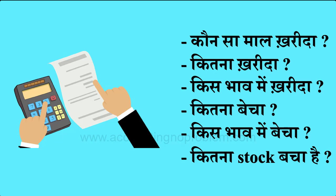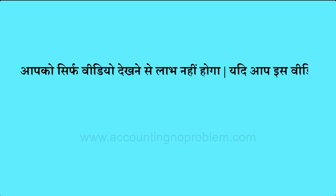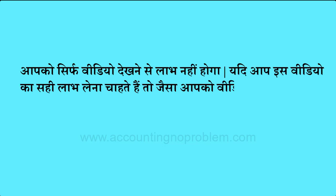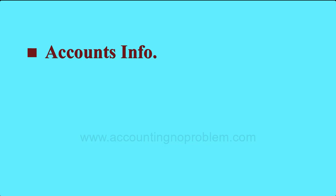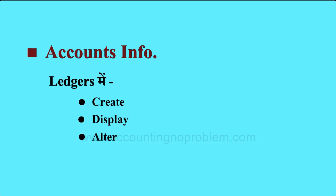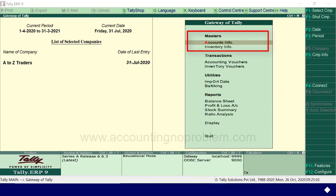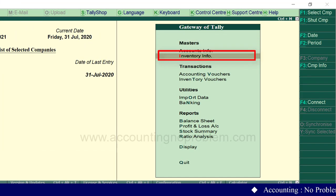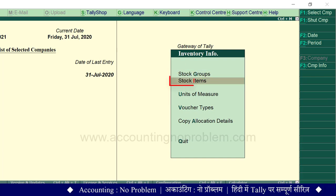आगे बढ़ने से पहले हम अपना निवेदन एक बार दोहरा दें — आपको सिर्फ वीडियो देखने से लाभ नहीं होगा। यदि आप इस वीडियो का सही लाभ लेना चाहते हैं तो जैसा वीडियो में समझाया गया है ठीक उसी तरह दो-तीन बार प्रैक्टिस ज़रूर करें। जिस तरह हमने Accounts Info के अंतरगत Ledgers में Create, Display और Alter options के बारे में बताया था, बिल्कुल वही process Inventory Info के अंतरगत Stock Items के लिए भी है। हम Gateway of Tally पर हैं और Inventory Info में Stock Groups और Units of Measure के बारे में सीख चुके हैं, अब Stock Items को समझते हैं।